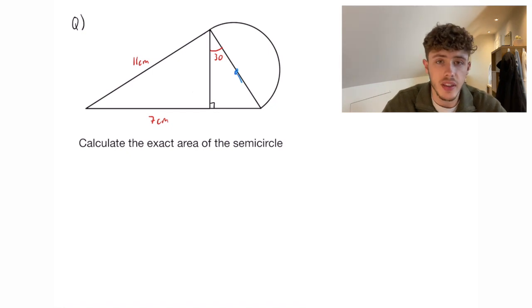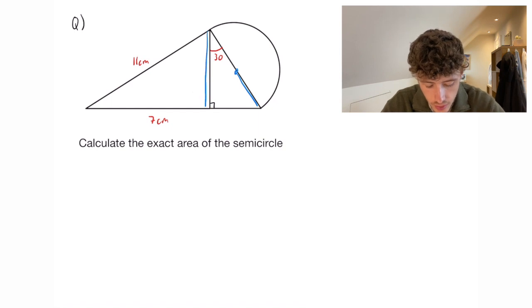Obviously to calculate the exact area of the semicircle we're going to need the radius which means we're going to need the hypotenuse of that triangle. So first of all to be able to get the hypotenuse we need this length here, down here, and to do that we will have to use Pythagoras.